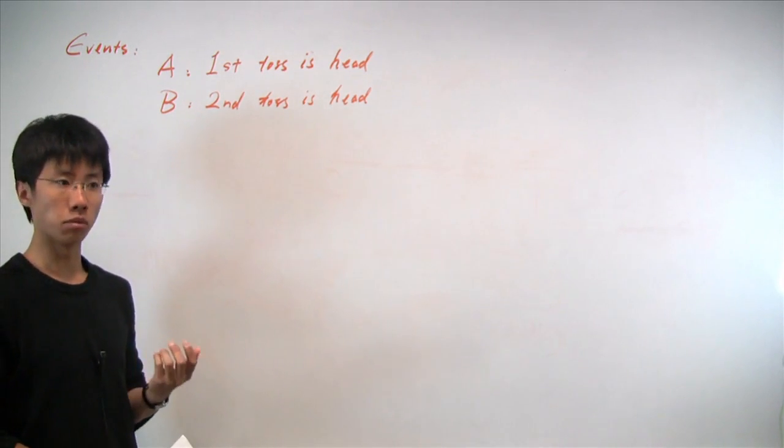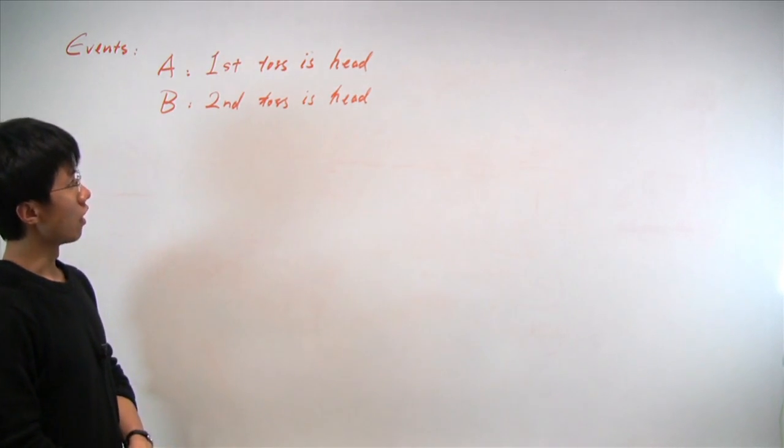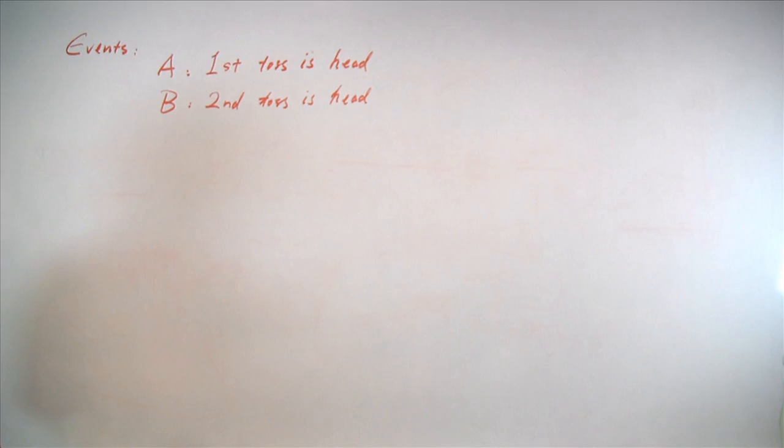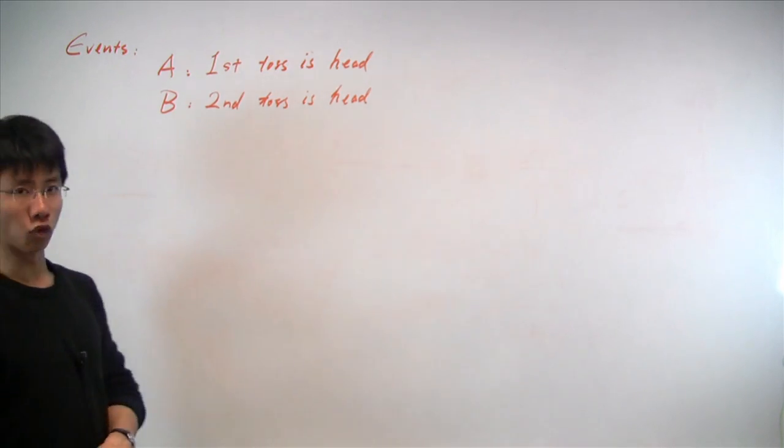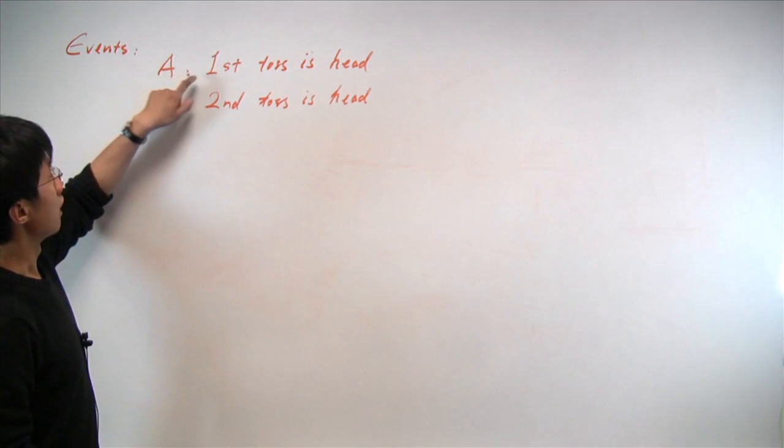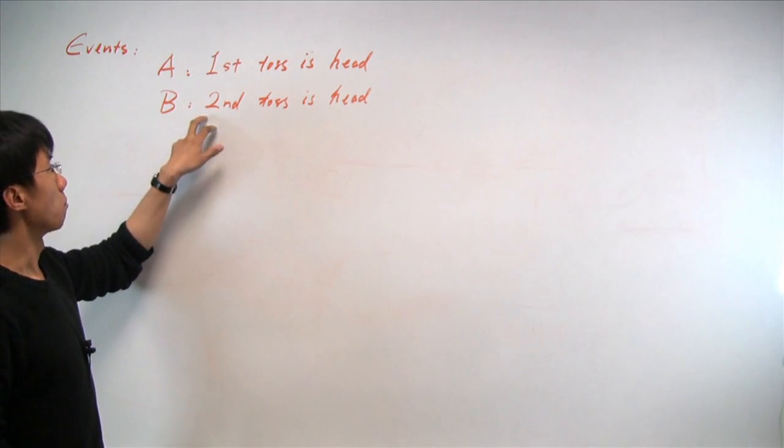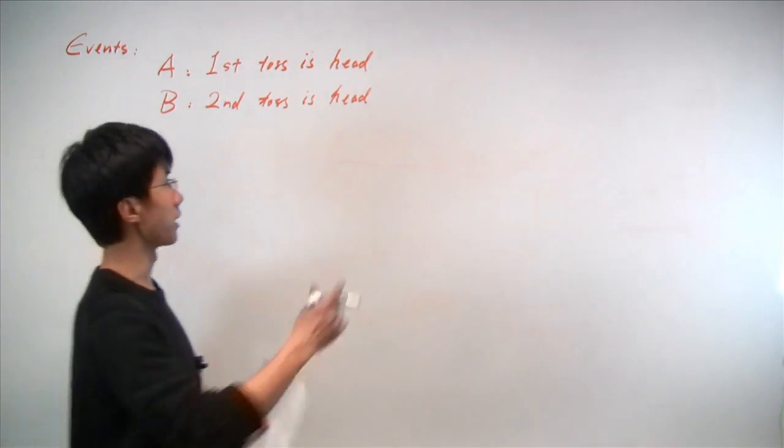And we're interested in knowing what's the probability that both coin tosses will end up being a head. The first step we're going to do is to convert the problem into a mathematical form by defining two events as the following. Event A is where the first coin toss is in the head. And similarly, event B will be having the second coin toss also be in the head.